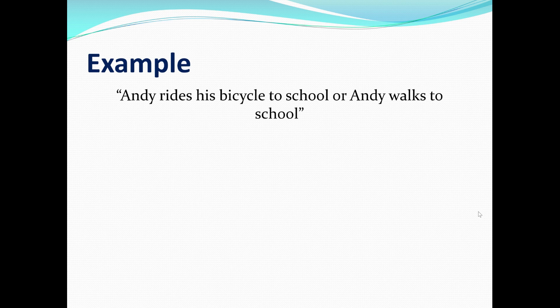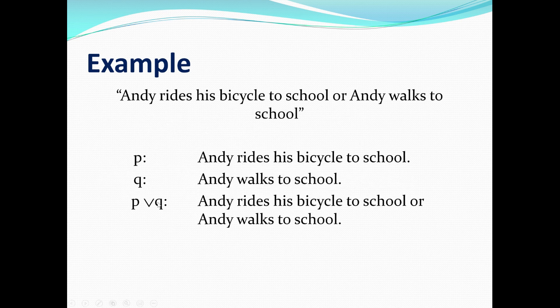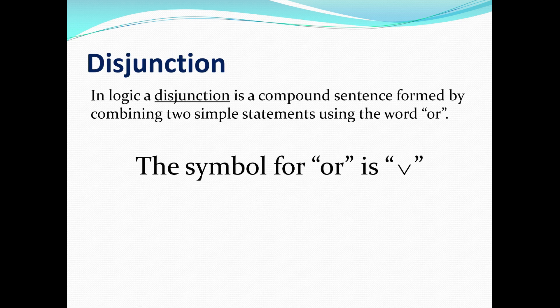Let's look at another example leading to another type of logic operation. The statement is: Andy rides his bicycle to school or Andy walks to school. Notice we don't have an "and" anymore — it's an "or" statement. Here P means Andy rides his bicycle to school, and Q means Andy walks to school. To combine these we use a special symbol that looks like a V, and this is called disjunction. In logic, a disjunction is a compound sentence formed by combining two simple statements using the word "or." The symbol for "or" looks like an upside-down caret or a V.